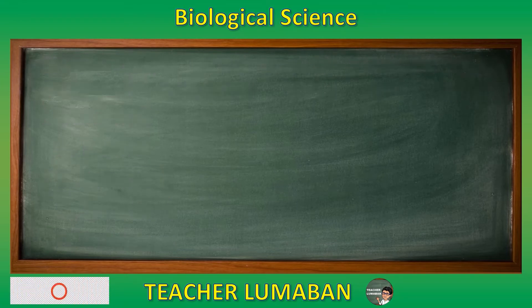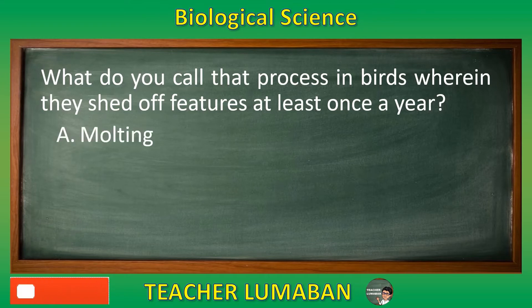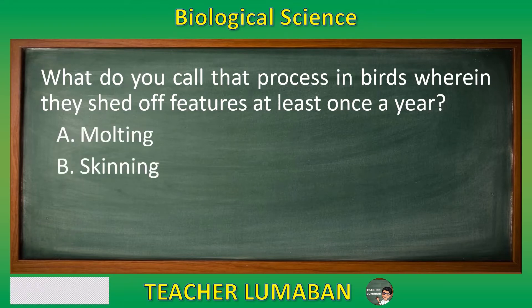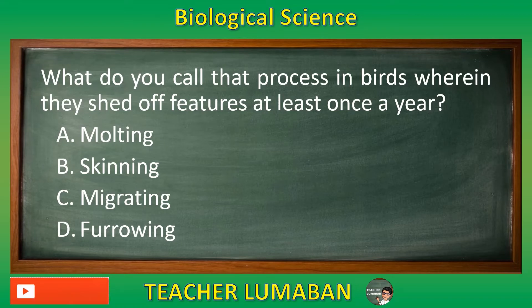What do you call the process in birds wherein they shed off feathers at least once a year? Letter A: Molding. Letter B: Skinning. Letter C: Migrating. Letter D: Furrowing.